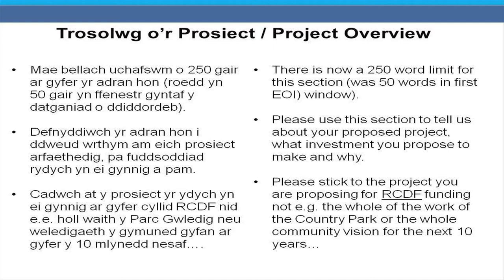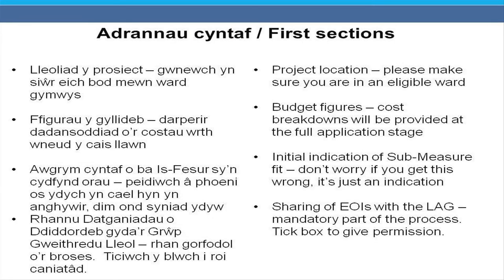Please stick to clearly describing just the project you're proposing for funding — not, for example, the whole of the work of a country park or a whole community vision for the next 10 years. Make sure you are in an eligible ward. Full cost breakdowns need to be provided at stage two. There's also a new initial indication of sub-measure fit, and a tick box giving permission to share your expression of interest with the Leader Local Action Group, which is a mandatory part of the process.